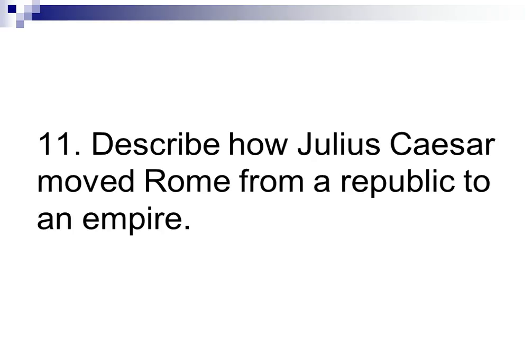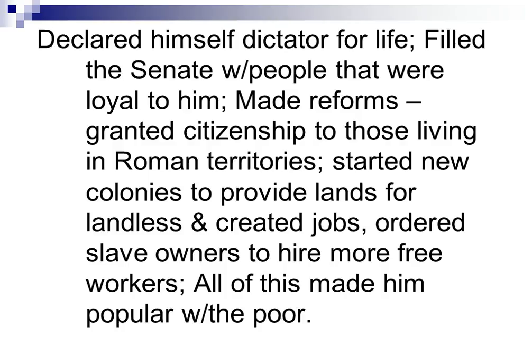Number 11: Describe how Julius Caesar moved Rome from a republic to an empire. Remember, this is your essay question on the test. First, he declared himself dictator for life. He filled the Senate with people who were loyal to him to make sure that what he wanted would get passed. He made reforms — changes for the better — by granting citizenship to those living in Roman territories, not just those living in Rome. He also started new colonies to provide land for the landless and to create more jobs, and he ordered slave owners to hire more free workers. All of these reforms made him very popular with the poor.